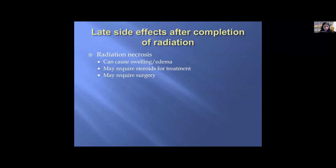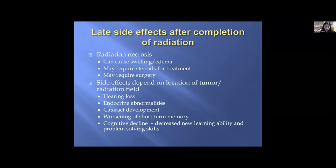Late side effects of radiation therapy can include continued swelling and edema, potentially requiring steroids, and in rare situations surgery for a condition called radiation necrosis — inflammation from dead cells caused by radiation killing the tumor that the body fails to clear. Other late effects depending on the radiation field location include hearing loss, endocrine abnormalities, cataract development, worsening short-term memory, and cognitive decline such as decreased new learning and problem-solving skills, though the patient remains fully functional and communicative.